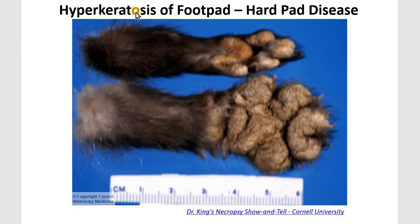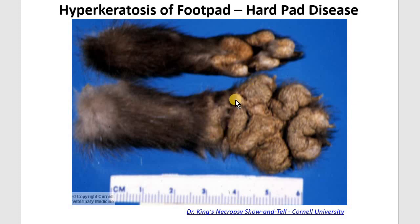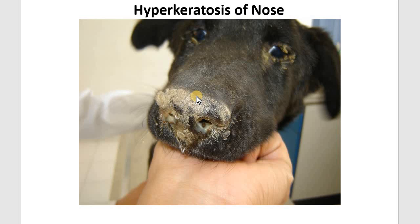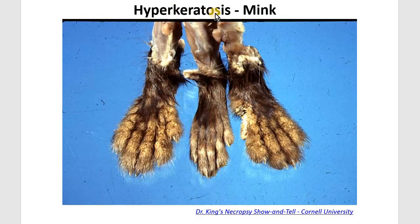In this episode we will discuss hyperkeratosis associated with canine distemper viral infection. Here we can see a control animal and a footpad affected by hyperkeratosis due to canine distemper virus. Hyperkeratosis essentially means an increased amount of keratin covering the skin. The surface is very roughened and hard, which is why it's called hard pad disease. The same lesion can also occur on the nose, as seen here.